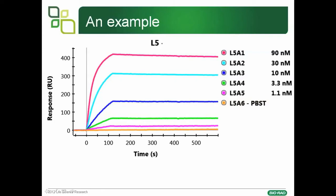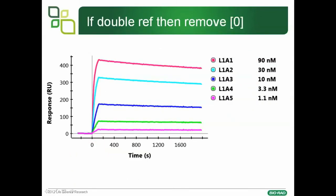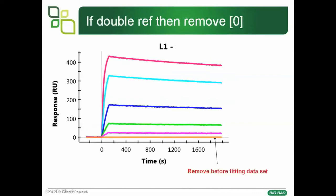We're now going to work through a real example. This is a data set, and the first thing we check for is that there is a dose response — the highest concentration gives the highest response, and as the concentration is reduced, the response is reduced. Before exporting it for fitting, we need to check that we've got a stable baseline and that the data is correctly offset to zero for both the x- and y-axis. We also need to make sure that there is curvature in the sensorgram so that the computer can accurately predict the maximum response. If the data is double-referenced, for example to A6, it's important that the A6 channel is removed before it is fitted.